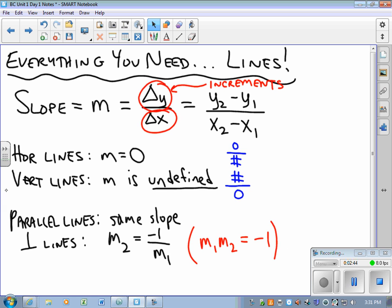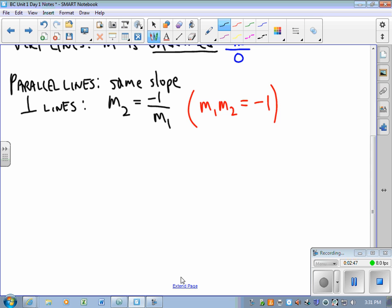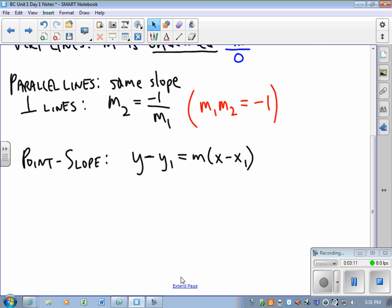The point-slope equation of a line comes back over and over again because when we write equations of tangent lines, we have a point, we have a slope, we use them. The equation in point-slope form is y minus y₁ equals slope times x minus x₁. This is a big, big deal. This is something that you want to have in your memory banks.